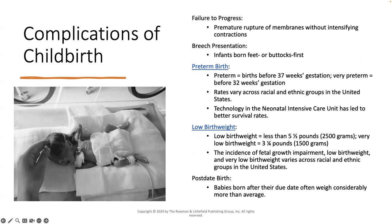Now that we've gone through the three stages of childbirth, we're going to discuss some complications. This may be triggering depending on your own personal experience, so if you would like to skip this section, please go ahead. One complication is failure to progress, which is a premature rupture of membranes without intensifying contractions — essentially the water breaks but labor stalls and does not continue into active delivery, which increases the risk of infection.